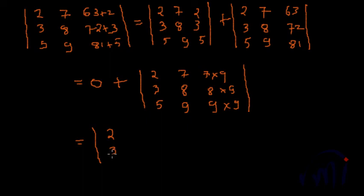Property 4 says if a given row or a column is multiplied by a constant, all elements are multiplied by a constant, the value of the determinant is equal to the value of the constant. So we can take 9 common outside. Now take a look at this - these two columns are same.